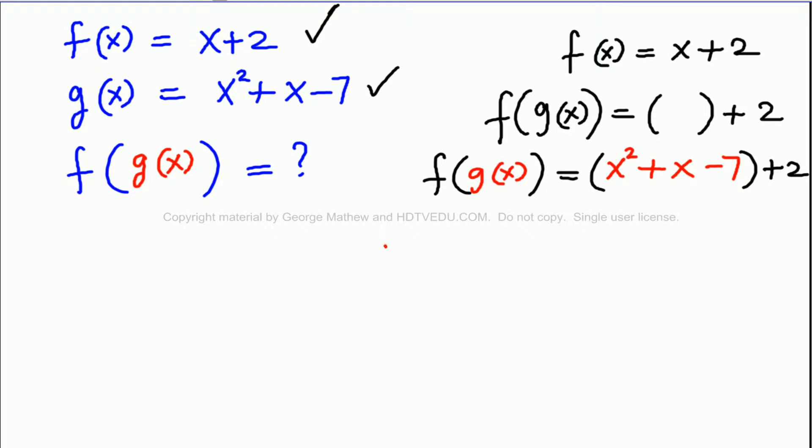So, what is f of g of x? And that is x squared plus x minus 7 plus 2. We simplify and what do we get? x squared plus x. Negative 7 plus 2 is negative 5.